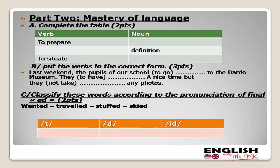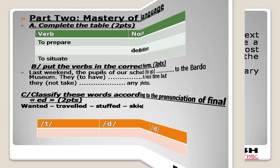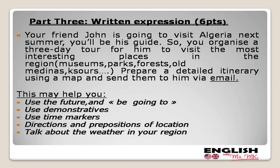The second part is mastery of language. In the first activity, I have drawn a table and they are going to fill it in with nouns and verbs depending on the word. The second activity is a form-based activity where I ask pupils to put the verb in the correct form — they will guess which tense is suitable according to the context. The last activity in the second part is inversion, and you have to explain to your pupils that this lesson is very important because they will deal with it even in high school.